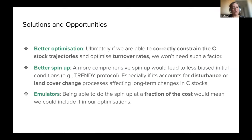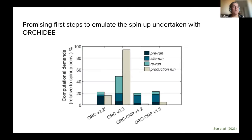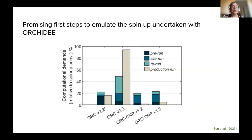Another option is to use emulators, which would allow us to perform the spin-up at a fraction of the cost and potentially incorporate it in our optimizations. There has been some promising work done within a different team using ORCHIDEE where they've been able to emulate the spin-up very effectively, reducing computational demands by nearly 80%, which is good news for future optimizations.